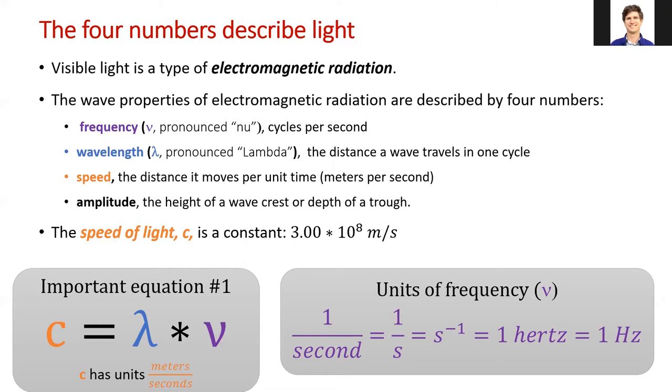The last property of light is amplitude, which is the height of the waves. This corresponds to the brightness of the light. In this class, though, amplitude will not be as important as the other three values.